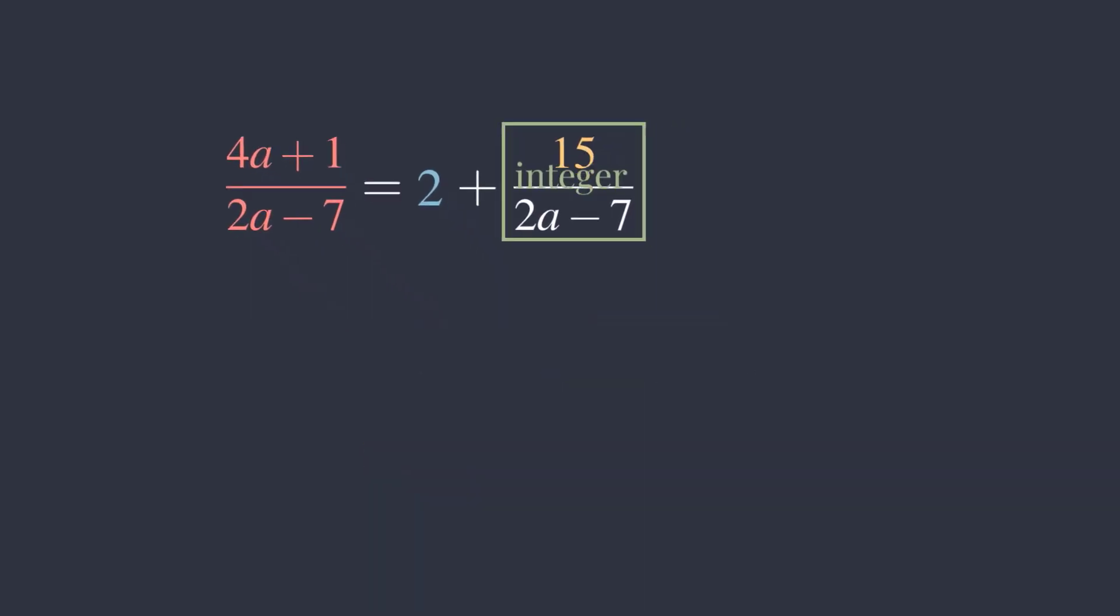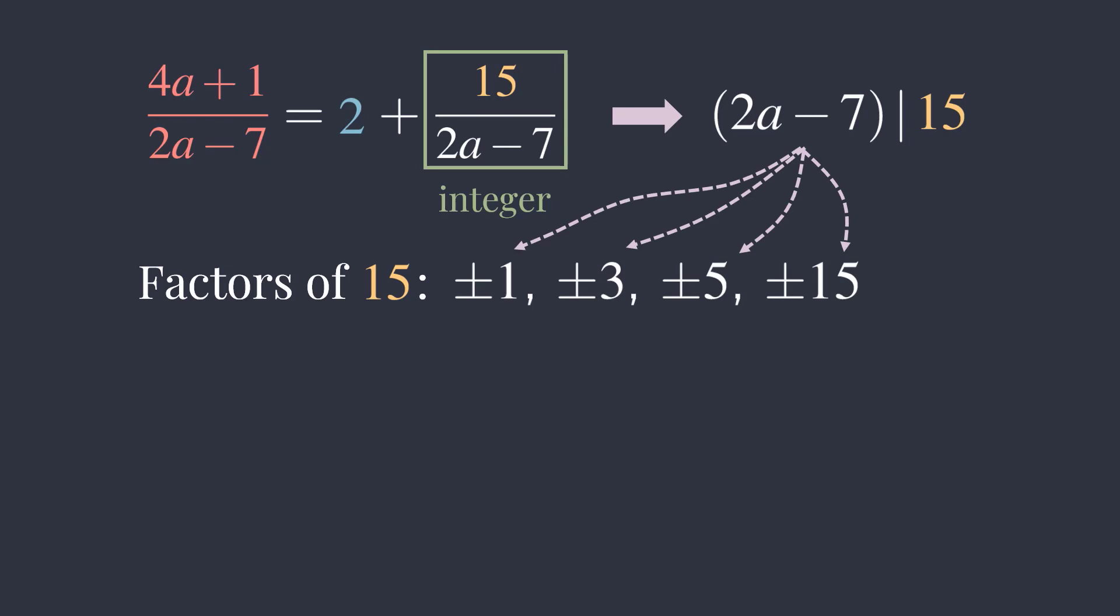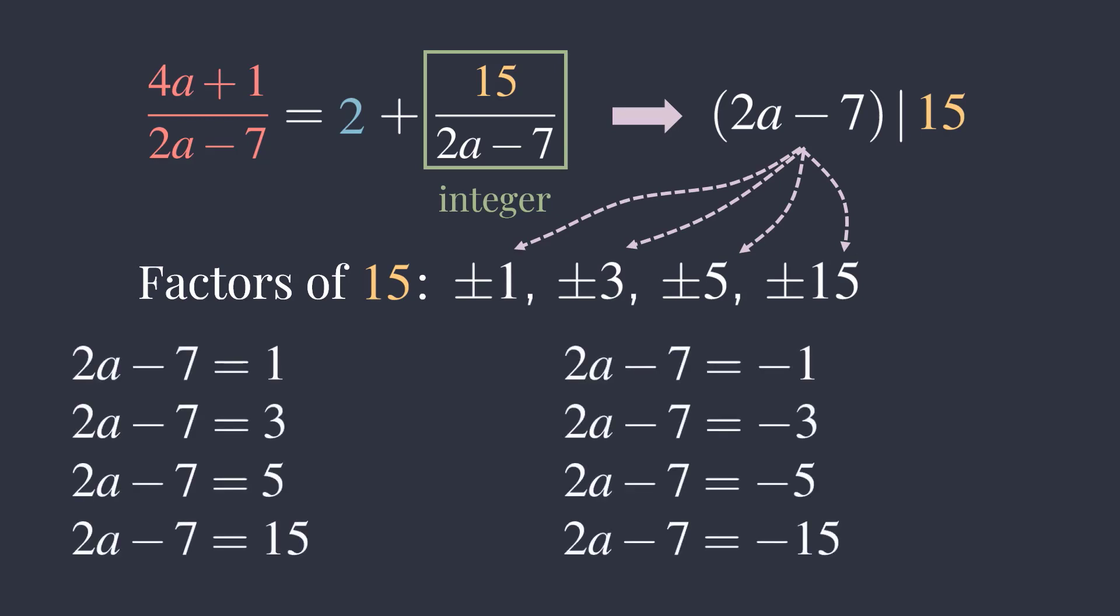If 15 over 2a minus 7 is an integer, then 2a minus 7 must be a factor of 15. Here are the factors of 15. Setting 2a minus 7 to each of these factors, we obtain these 8 equations.